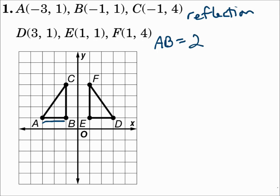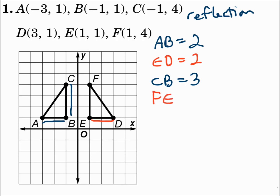Segment AB corresponds with segment ED on the right. That one's also horizontal and also has a length of two — that's one pair of congruent sides. Segment CB on the left is vertical; we can count it, and it's three. That matches segment EF on the other triangle, which is also vertical with a length of three. So far we have two pairs of congruent sides. For the third pair, those are diagonals, so we'll use the distance formula. For segment AC, we'll use the coordinates of points A and C.